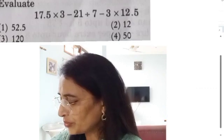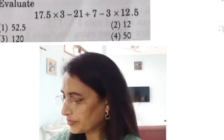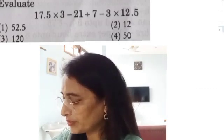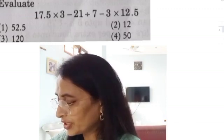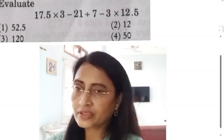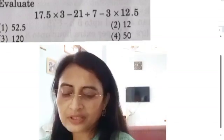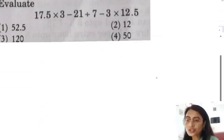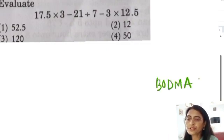Evaluate 17.5 into 3 minus 21 divided by 7 minus 3 into 12.5. Options are given: 52.5, 12, 120, 50. Here nothing but this simplification. We simplify and use BODMAS: bracket, of, division, multiplication, addition, and subtraction.